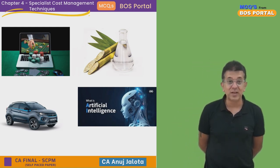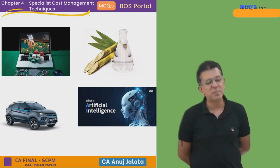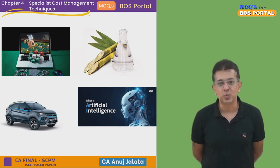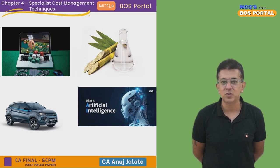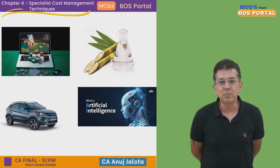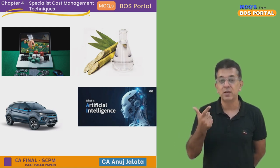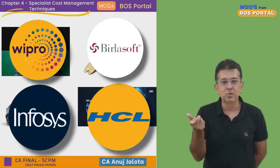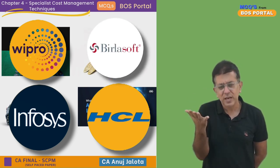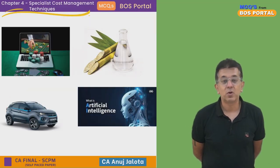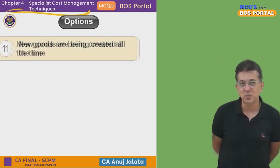Do remember — whenever an industry is in a growth stage, everybody who enters basically has huge scope. You might not even need product differentiation because as the industry grows, everything grows. Today any new company entering AI — whether Infosys, Wipro, HCL, or Birla Soft — is going to do great because AI itself is a booming industry.